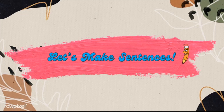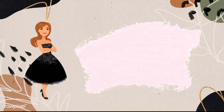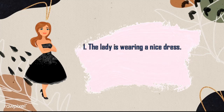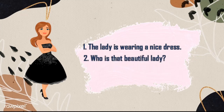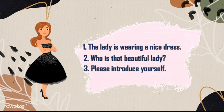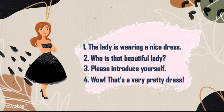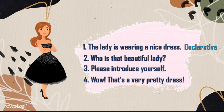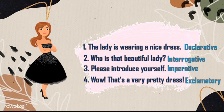Now let's try making sentences based on the following pictures. Here are the sentences I made for the beautiful lady. Number one: the lady is wearing a nice dress. Next: who is that beautiful lady? Third: please introduce yourself. Fourth: wow, that's a very pretty dress! That's right — the first one is a declarative sentence, the next sentence is an interrogative sentence, the third one is an imperative sentence, and the last one is an exclamatory sentence.